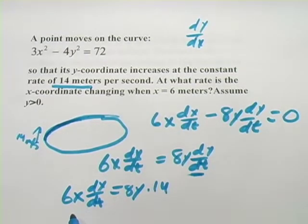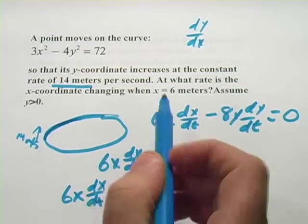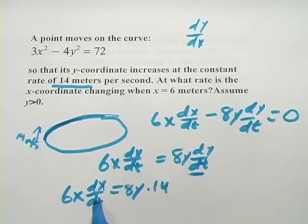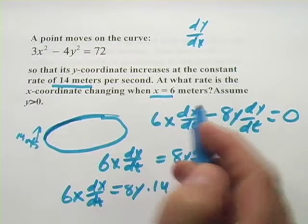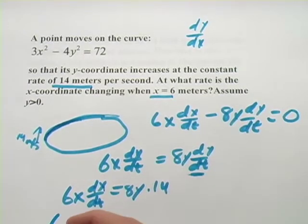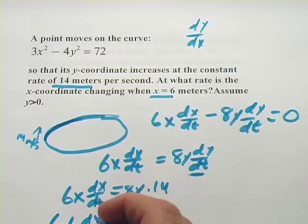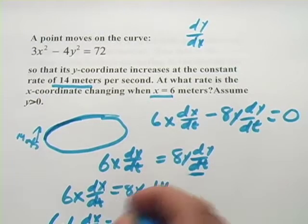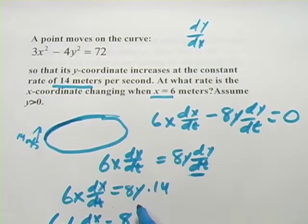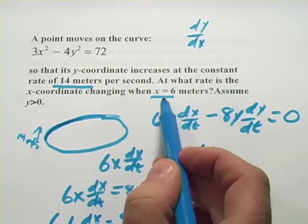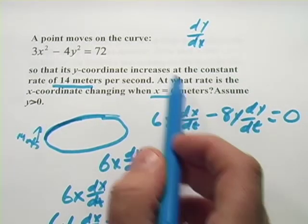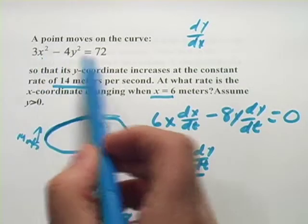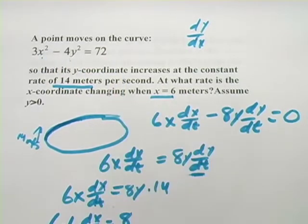And over here, well, dx dt, that's what we're looking for. So this term is going to stay there. But they're asking about the rate dx over dt when x equals 6 meters. So I can plug 6 in here. So 6 times 6 times dx dt equals 8. Now I've still got a y here. What is y when x equals 6? Well, that's even easy enough to figure out. I can just take the x value 6, plug it in here, and then solve for y. So if I did that, let me do it over here.